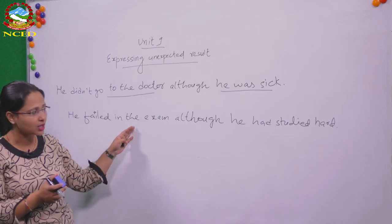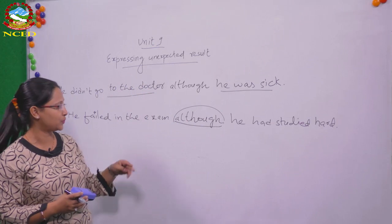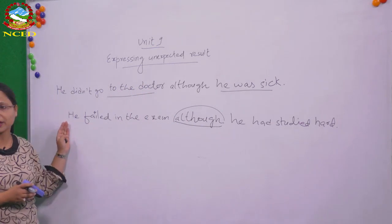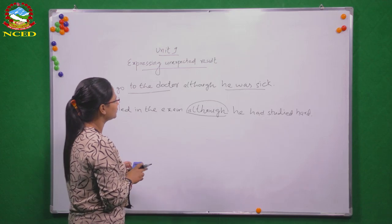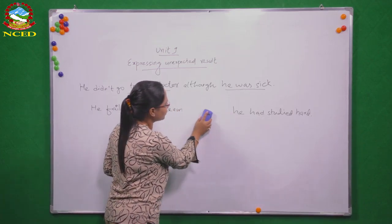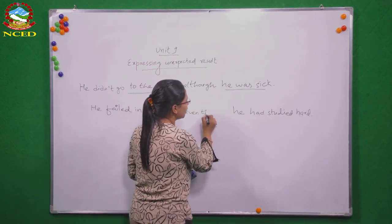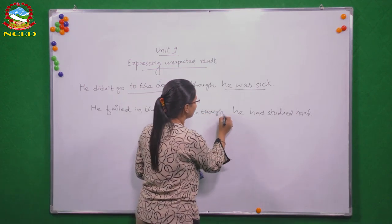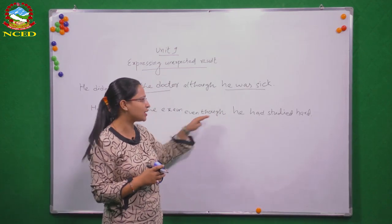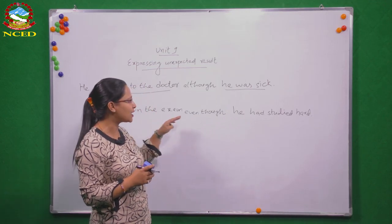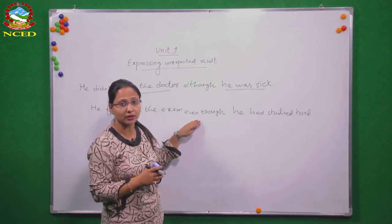This is called an unexpected result, and 'although' is one of the connectives we use to express it. Now instead of 'although' we can also write 'even though.' 'He failed in the exam even though he had studied hard.' It means the same thing. You can use 'although' or 'even though' interchangeably — the meaning is the same.